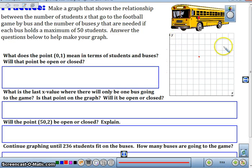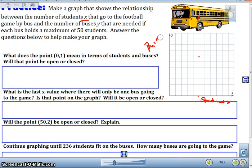And it says, make a graph that shows the relationship between the number of students, x. So x is going to be our number of students. So that would be our students down here that we are looking at. The number of students that go to a football game by bus, and the number of buses, y. So y is going to be our buses that we are looking at. I'm going to try and write with my pen, buses.